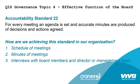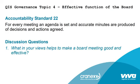Standard 22: for every meeting, an agenda is set and accurate minutes are produced with decisions and actions agreed. Evidence includes a schedule of meetings, minutes of meetings, and interviews with board members, the director, or management team to find out how people are following up on the minutes. The discussion question is: what in your view helps to make a board meeting good and effective?